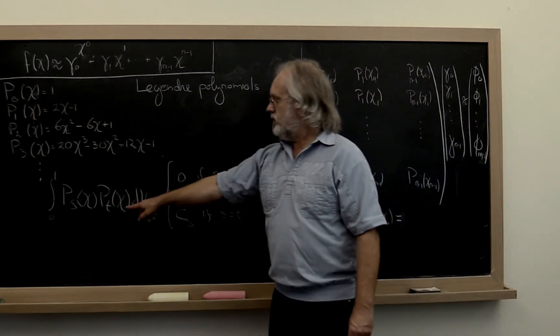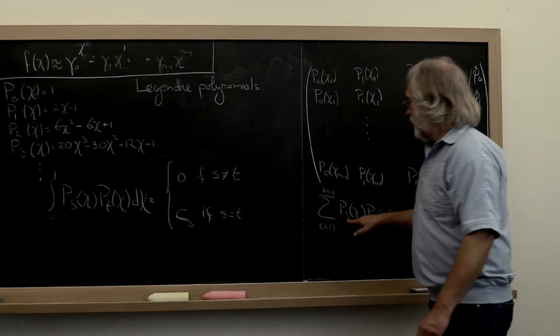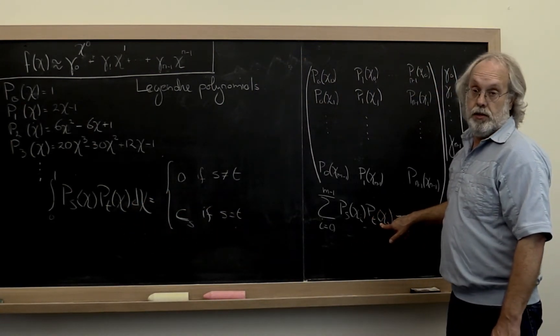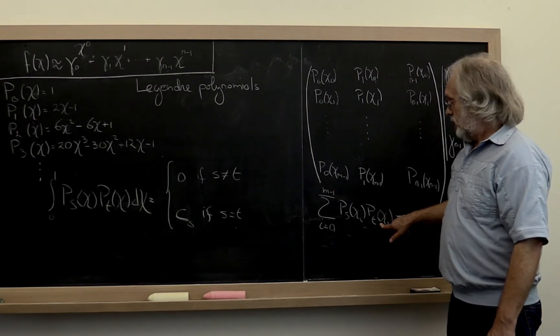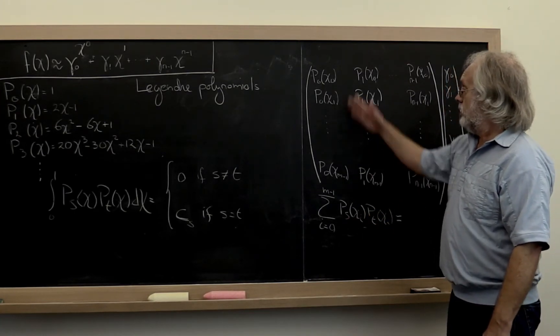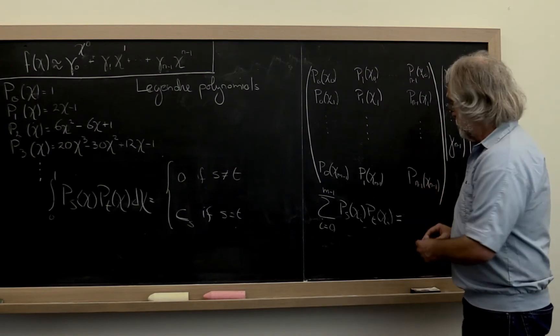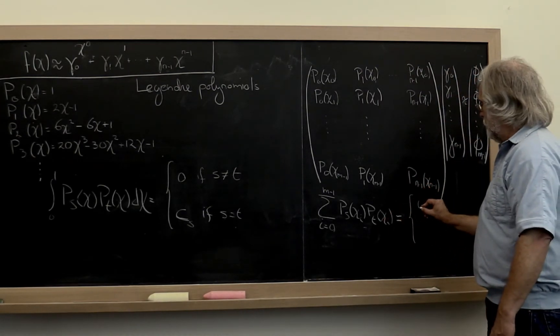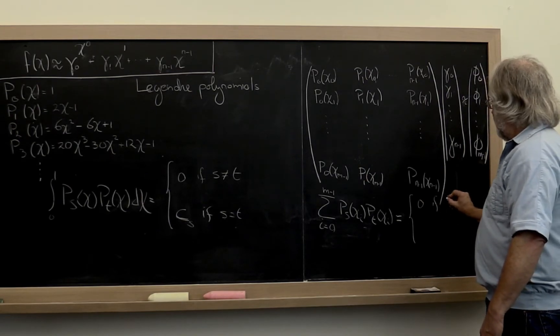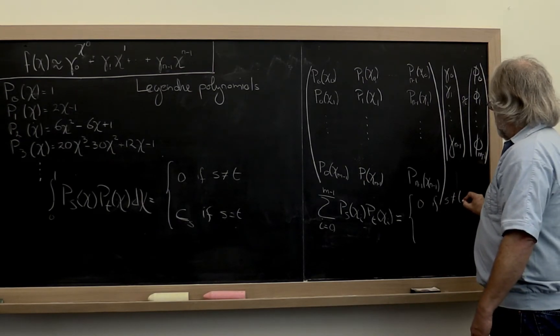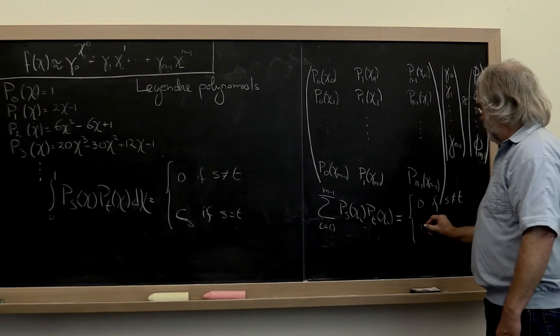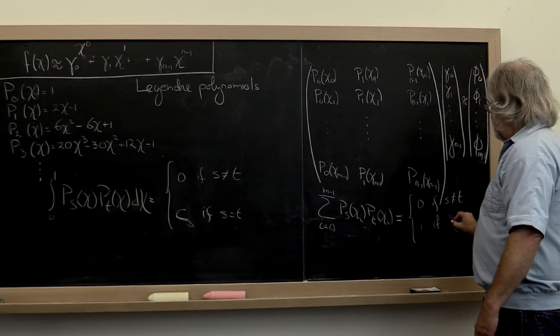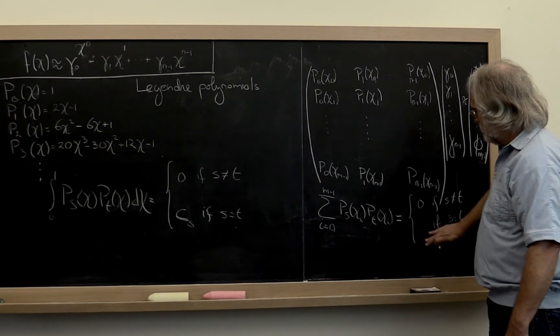The equivalent of this integration here, but now with these sampled polynomials, is to take the dot product of these columns. So what we would hope is that this is equal to 0 if s is not equal to t and equal to 1 if s is equal to t. Well, not 1 but some constant.